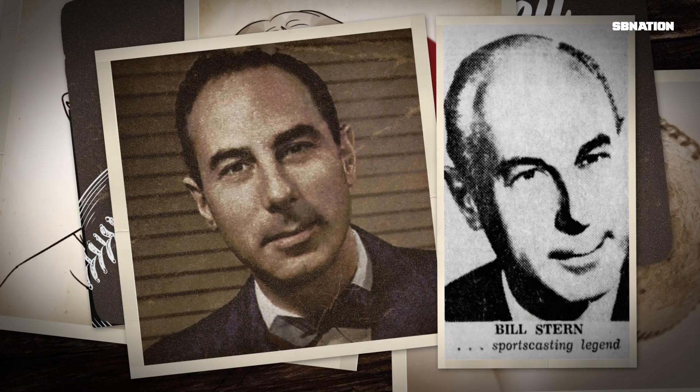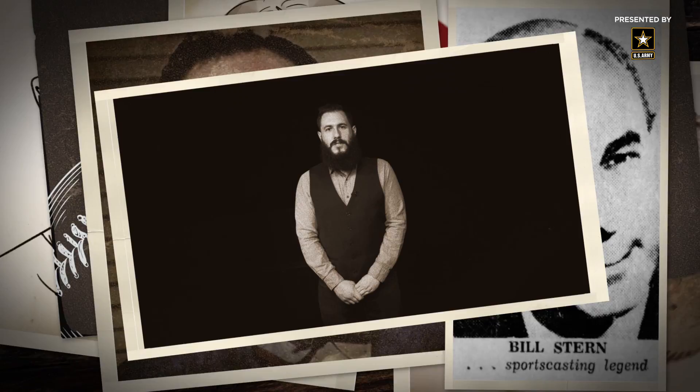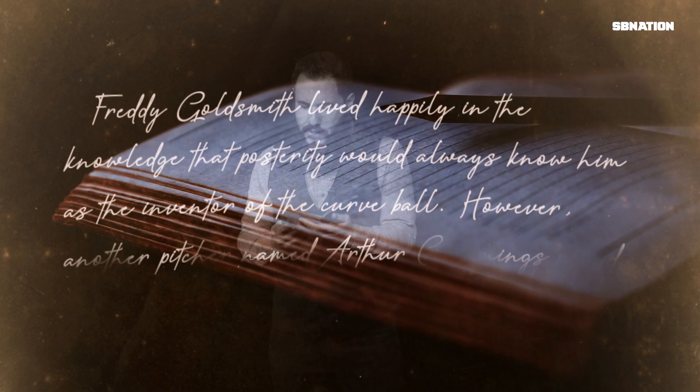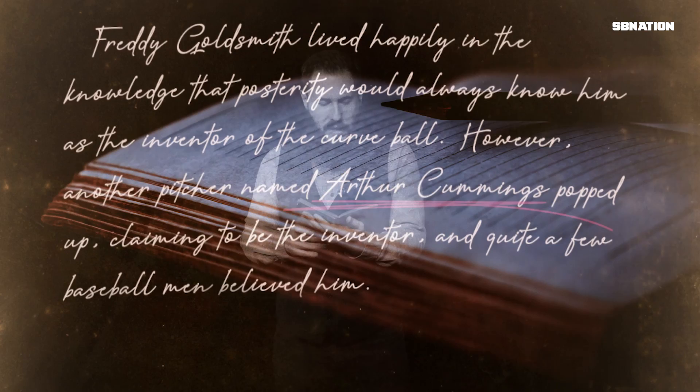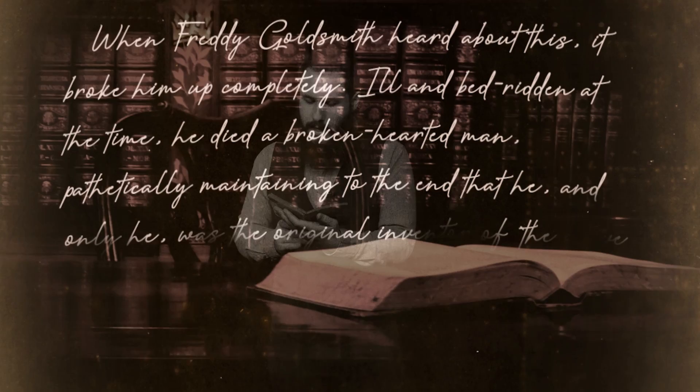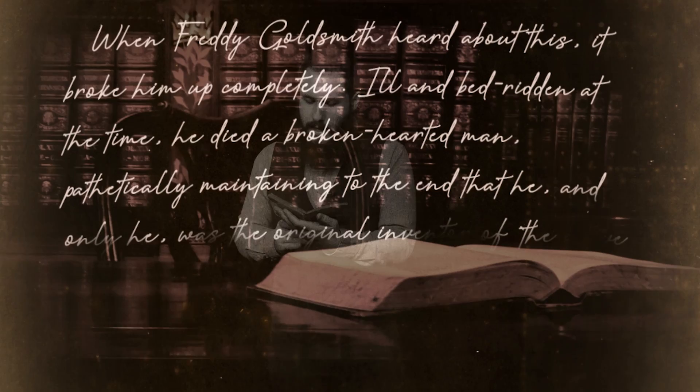One man who sides with Fred Goldsmith is Bill Stern, a sportscasting legend enshrined both in the Radio Hall of Fame and on the Hollywood Walk of Fame. Stern wrote about Goldsmith's invention of the curveball in his 1949 book, Bill Stern's Favorite Baseball Stories. In it, he writes: 'Freddie Goldsmith lived happily in the knowledge that posterity would always know him as the inventor of the curveball. However, another pitcher named Arthur Cummings popped up claiming to be the inventor, and quite a few baseball men believed him. When Freddie Goldsmith heard about this, it broke him up completely. Ill and bedridden at the time, he died a brokenhearted man, pathetically maintaining to the end that he, and only he, was the original inventor of the curveball.' Goldsmith died in 1939, the same year Arthur Candy Cummings was inducted into the Baseball Hall of Fame.